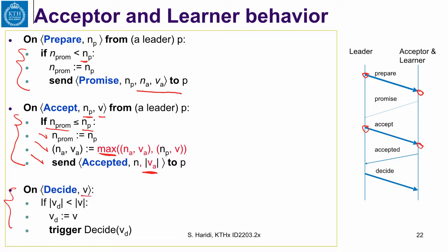For the learner: if it receives a decide message, it checks whether this is a longer sequence, updates its decided sequence accordingly, and triggers the corresponding event.